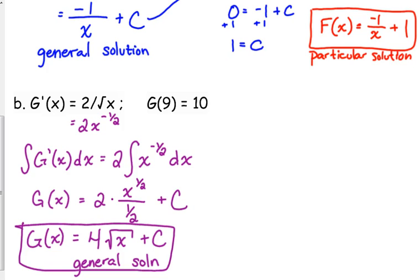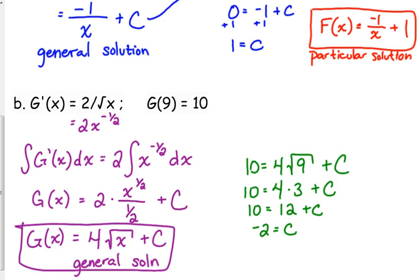Let's plug in our specifics to get our particular solution. So the function is equal to 10 when x is 9. So 10 is equal to 4 times the square root of 9 plus C. The square root of 9 is 3. 4 times 3 is 12. Move that over. Negative 2 is our C. So our particular solution is G(x) equals 4 times the square root of x minus 2, not under the square root, just on the end.